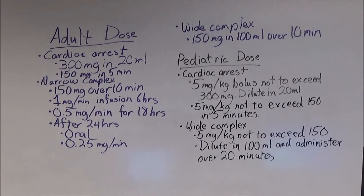For stable wide complex tachycardia, give 150 mg diluted in a minimum of 100 mLs of normal saline over a period of 10 minutes. For pediatric patients in pulseless VTAC or VFib, administer a 5 mg per kg bolus, not to exceed 300 mg, diluted in 20 mLs of normal saline, and administer IV slam. This may be repeated once after five minutes, but the second dose is not to exceed 150 mg.